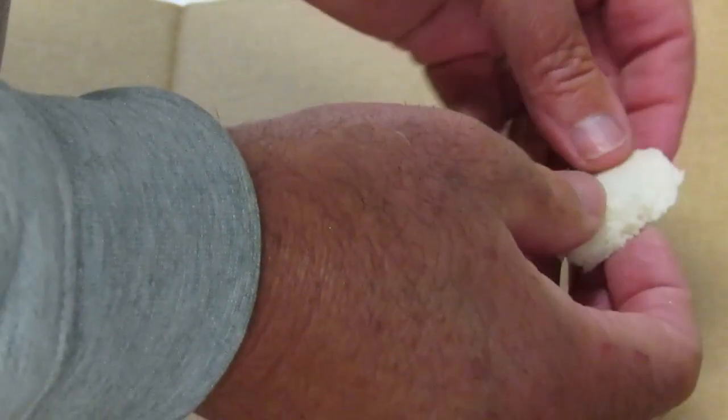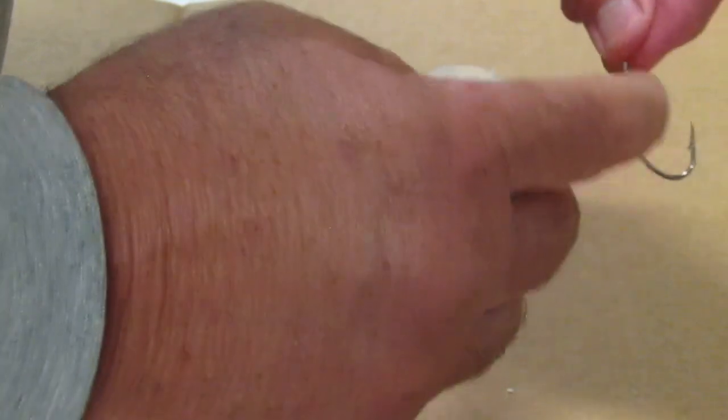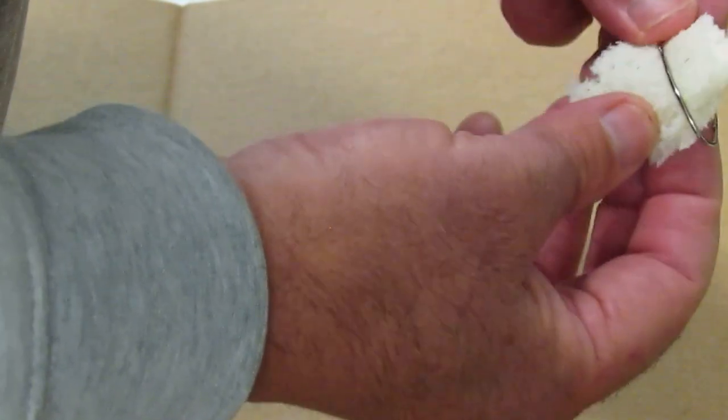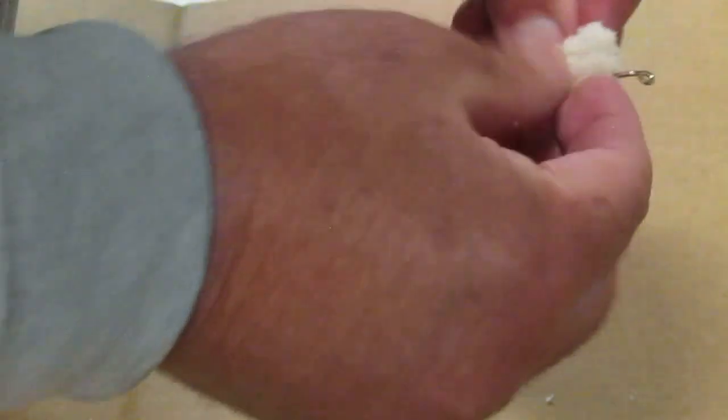So with a J hook it's a little different. With a J hook you want the barb to be showing. So same thing, just a little rectangle. But with a J hook we are going to put the bread on like this.